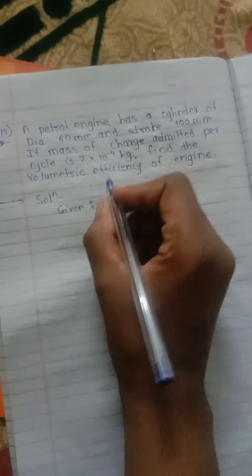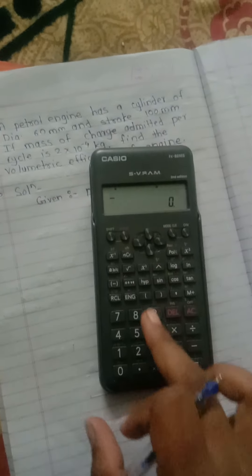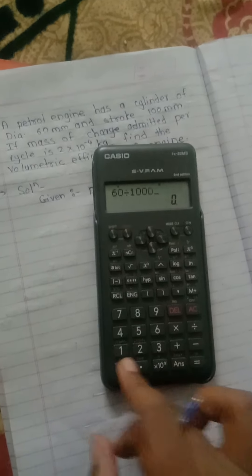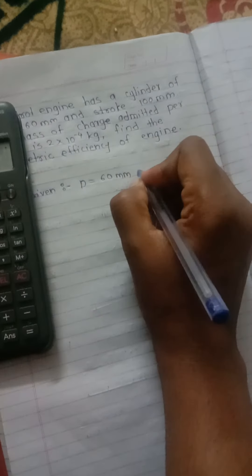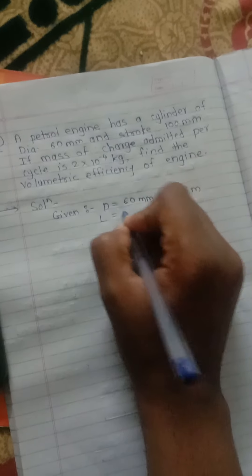First, we write down the given data. Diameter of cylinder: D = 60 mm, which converts to 60 divided by 1000 = 0.06 meters. Stroke: L = 100 mm, which converts to 100 divided by 1000 = 0.1 meters.